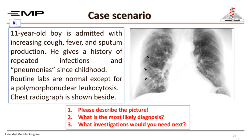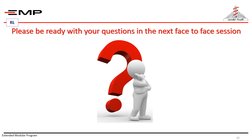Now, test your knowledge. We have an 11-year-old boy admitted with increased cough, fever, and sputum production. He gives a history of repeated infections and pneumonia since childhood. Routine labs are normal except for polymorphonuclear leukocytosis. A chest radiograph is shown. Please describe the picture, identify the most likely diagnosis, and determine what investigations you would need next. This will be discussed together in the face-to-face session. Please be ready with your answers. Thank you.